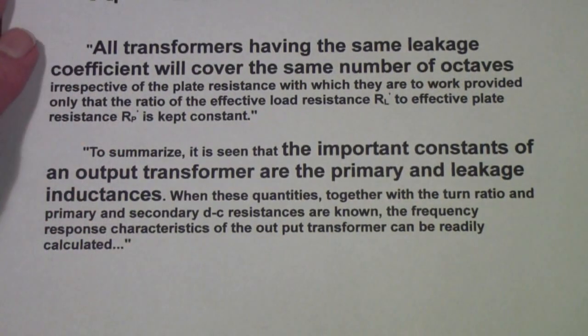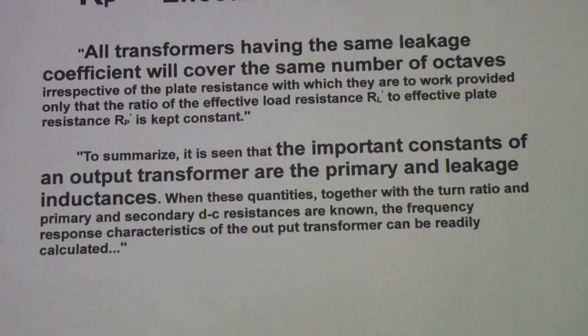Then, at the very conclusion, they say to summarize, it's seen that the important constants of an output transformer are the primary and leakage inductances. And then they finish with, when these quantities together with the turn ratio, primary and secondary resistances are known, the frequency response of the output transformer can be readily calculated. Let me show you what they're talking about there with a blow-up version of the circuit reduced to unity turns ratio.